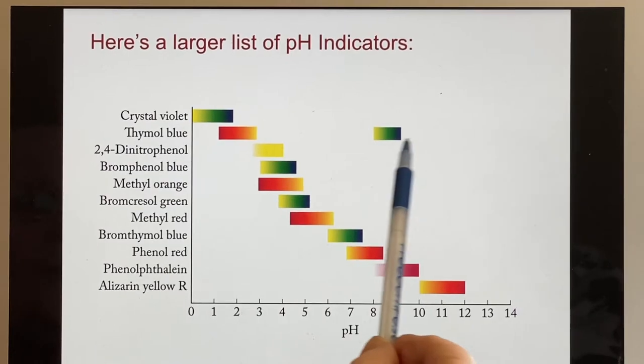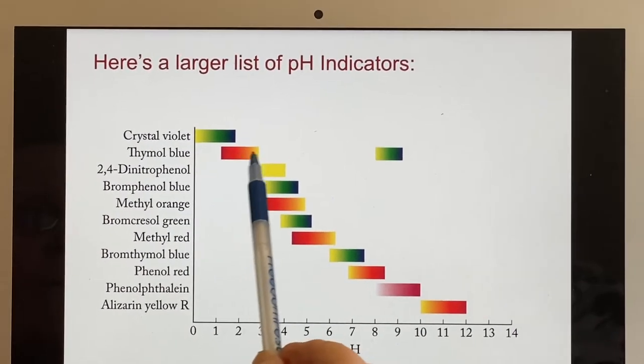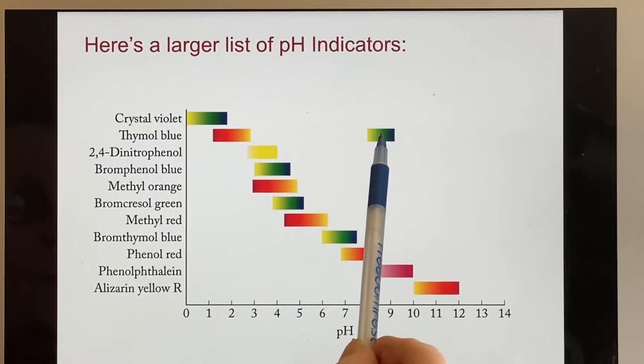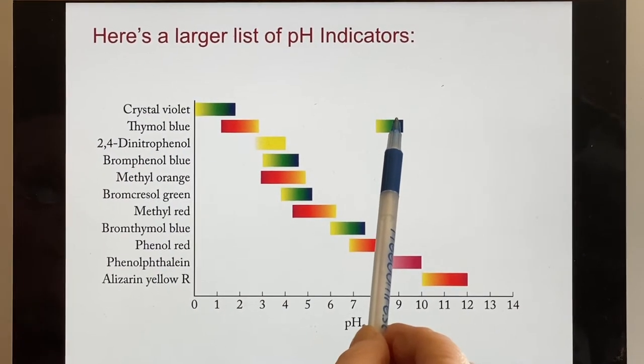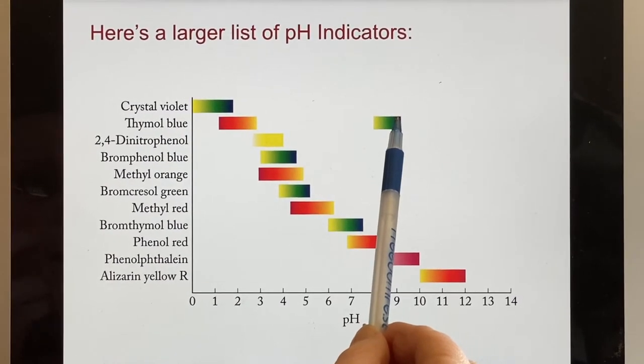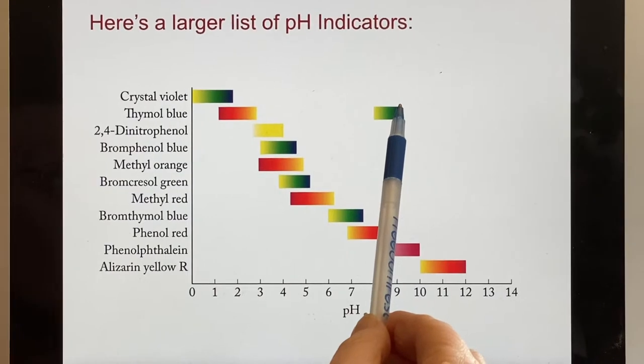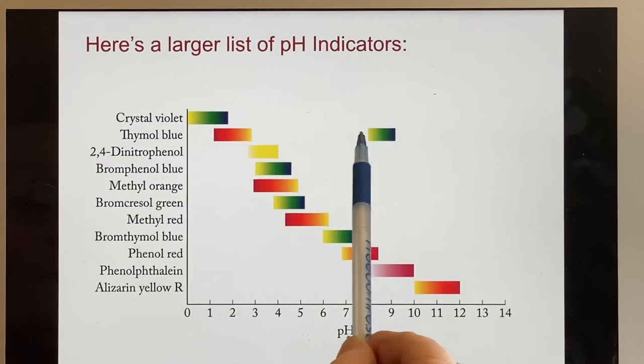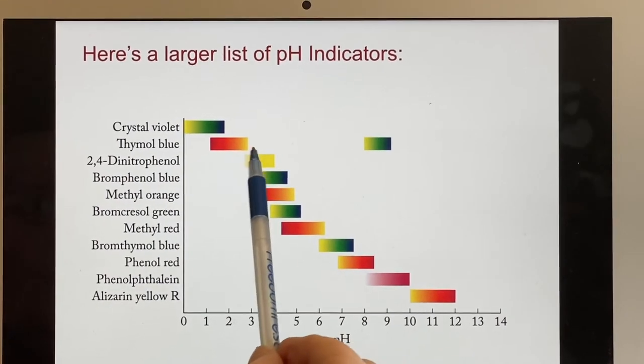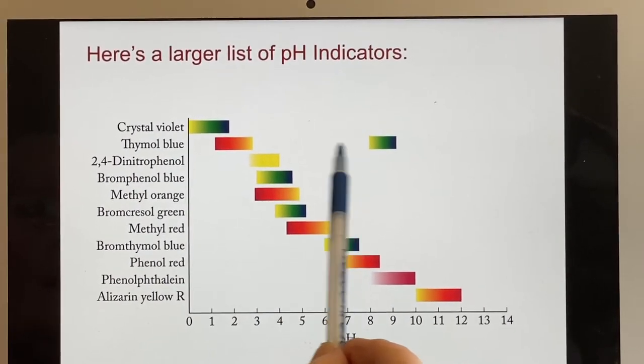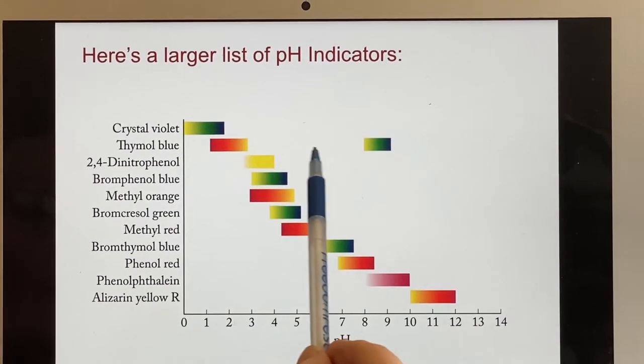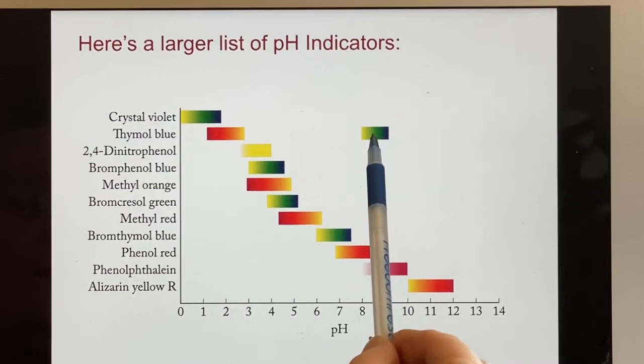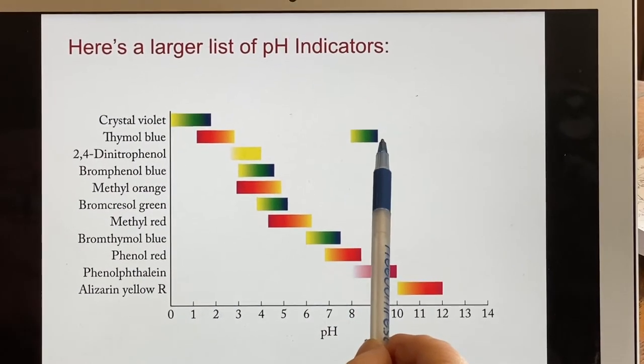Thymol blue actually has a range that extends where there are two different - this must be one of those cases where you have two different. It must have two H pluses that it can lose. It can lose one down here in this range and another one up here at this range. In between here, even though they've shown this as blank, you'll notice this end is yellow, that end is yellow. It's just yellow all the way through here. So it will go from red to yellow, and then up at the high end it will go from yellow to deep blue.